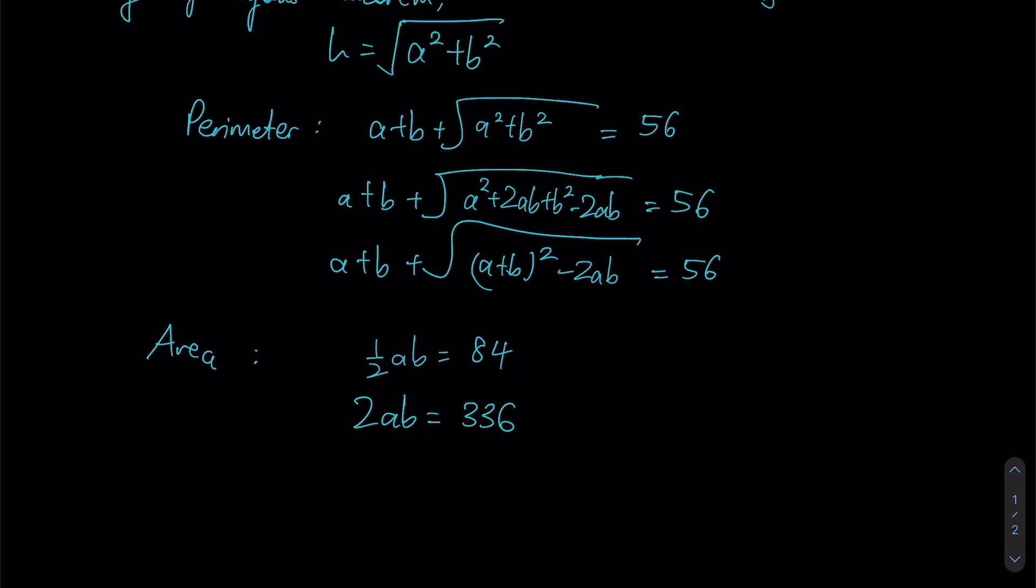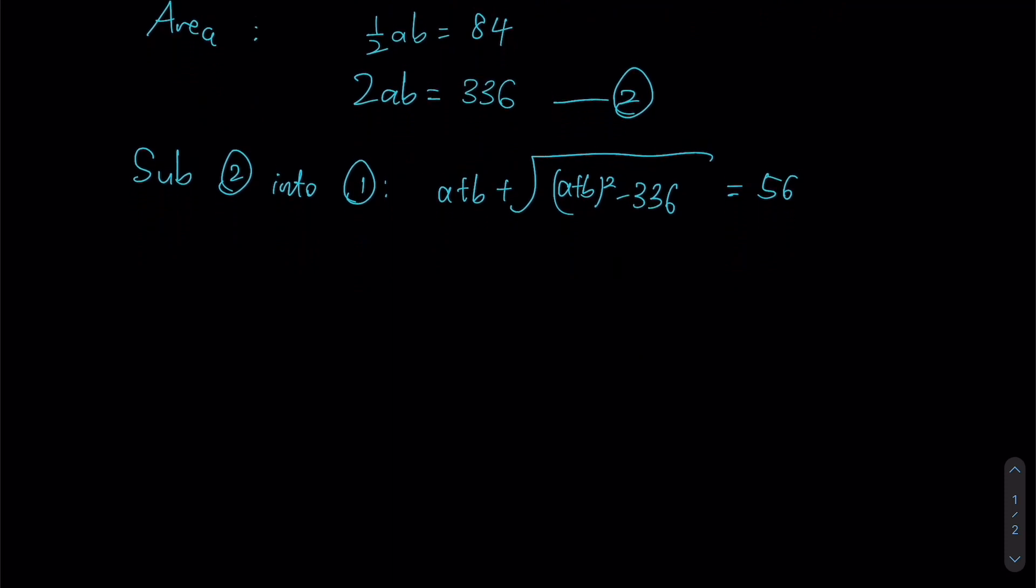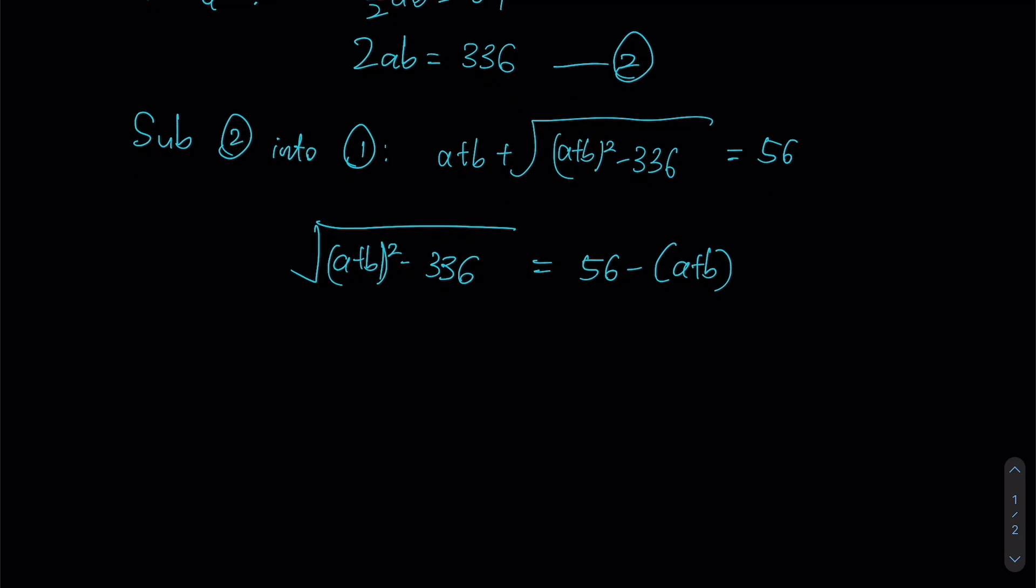So substituting, let's call this equation 1 first, and we'll call this equation 2. So substituting equation 2 into equation 1, what do we end up with? A plus B plus square root of A plus B squared minus 336, because that's the value over here, equals 56. Now, before we start squaring both sides of the equation to get rid of my square root, it would be a good idea to shift this aside first, so that we isolate our square root on one side of the equation. So on our left-hand side, this is what we have. And on my right-hand side, I'll have 56 minus A plus B. Notice I left the bracket here unexpanded for now, and you'll see why in a bit.